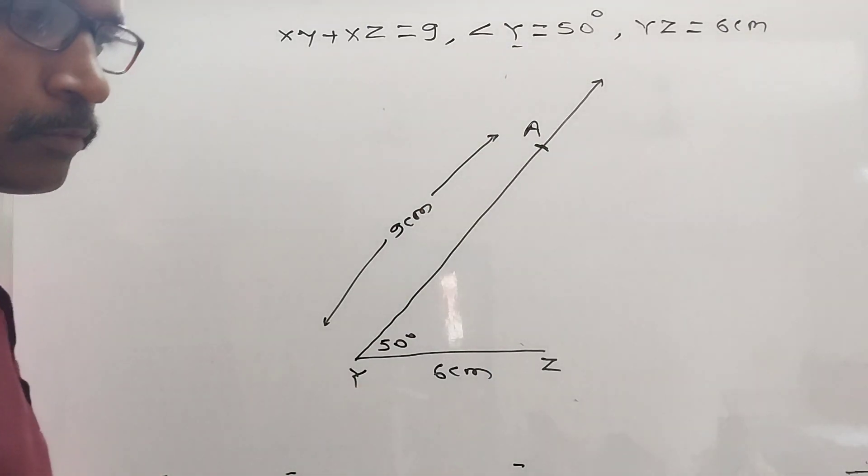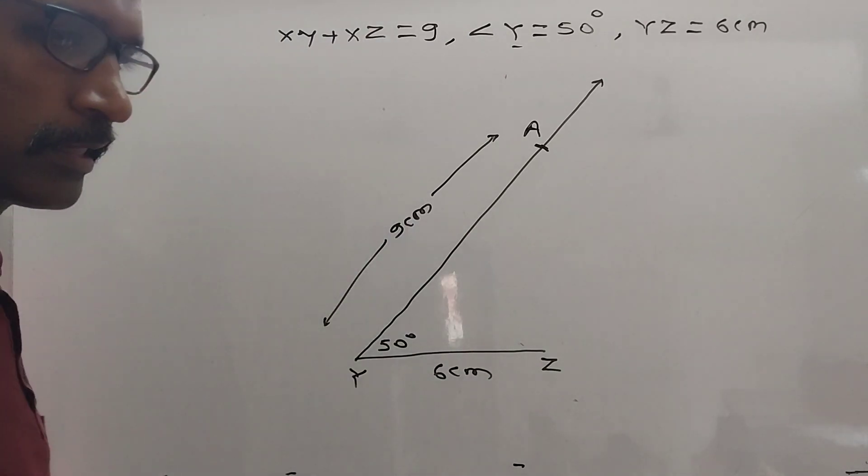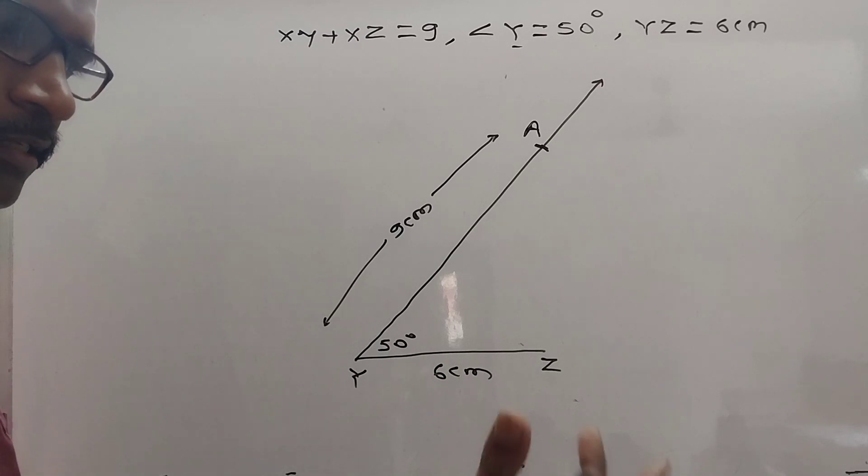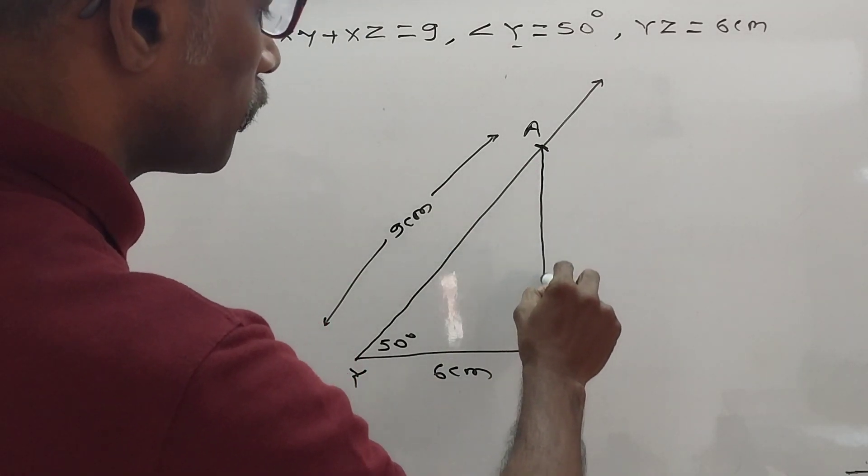Here, give name to that point other than X, Y, and Z. Remaining 23 alphabets are there, use any one. Then join AZ. Okay.